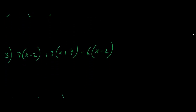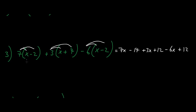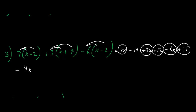Now let's move on to expression number 3. Let's expand it. So here we get 7x minus 14 plus 3x plus 12 minus 6x and then plus 12. So this is equal to 7x plus 3x minus 6x is 4x. And here we have plus 12 plus 12 which is 24 minus 14. So we are left with 4x plus 10 here if we expand this expression.